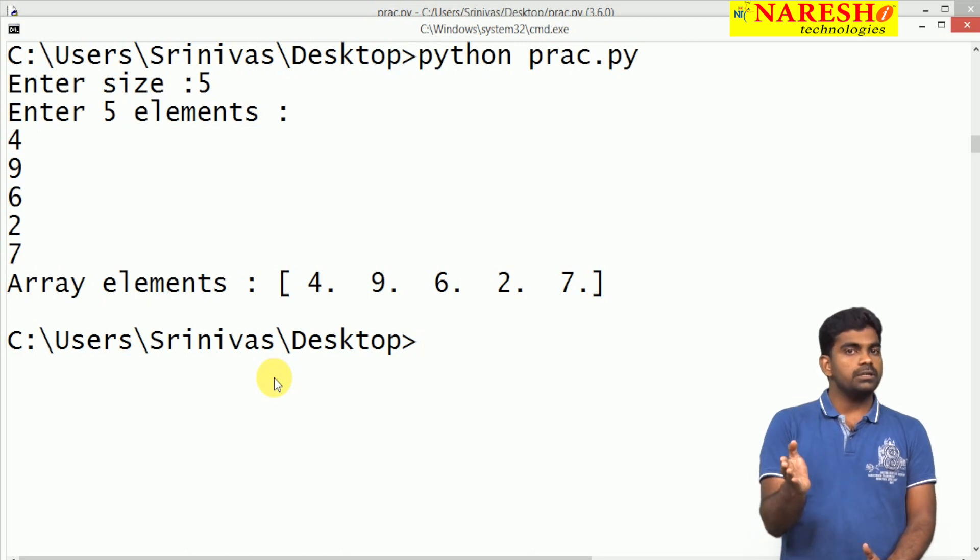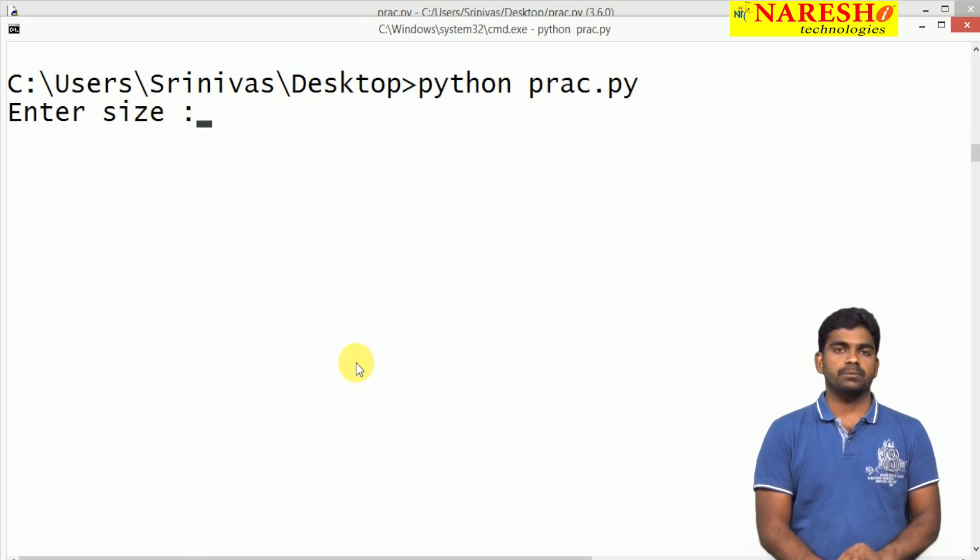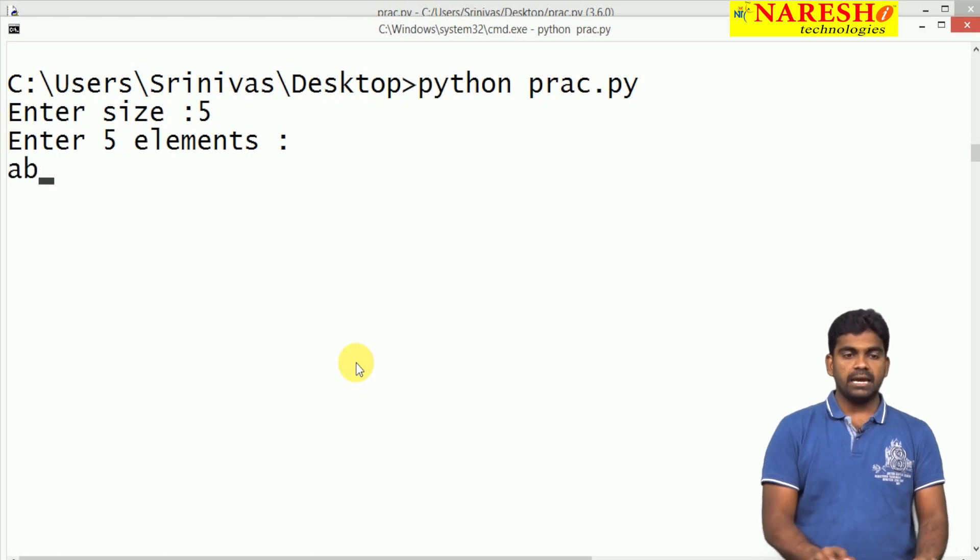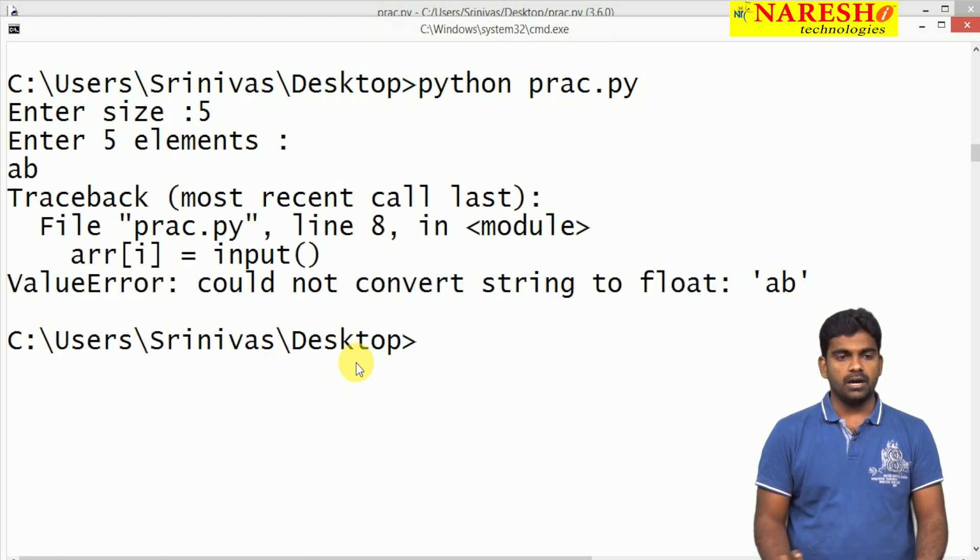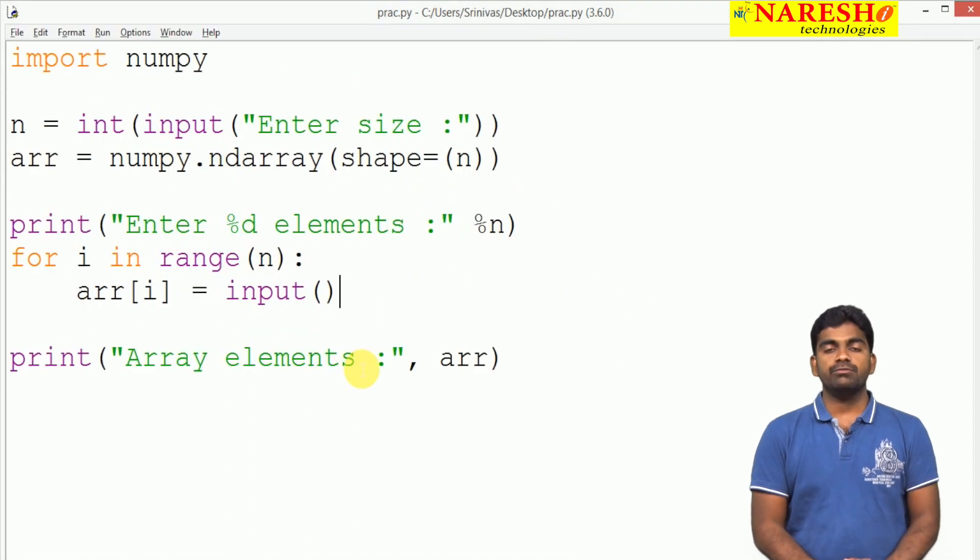If you want to convert that float into integer, it's okay. For example, when we try to specify string type elements - size is 5, the first element 'ab' is a string - now you will get an error. Of course, we can call it an exception, ValueError: could not convert string to float 'ab'. By default it is float type, and the string you have given cannot be converted to float.